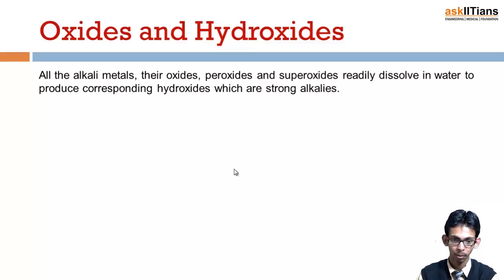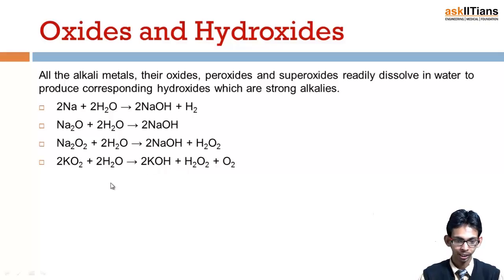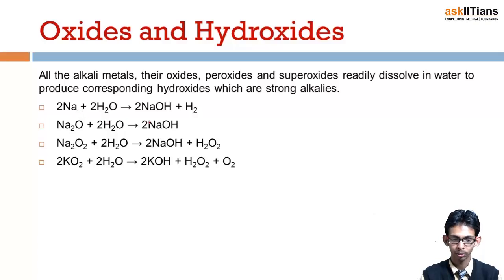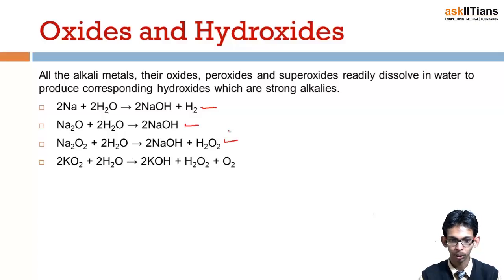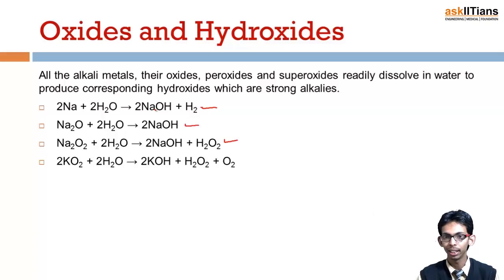This is the representation of the formation of hydroxides of sodium. Sodium dissolves in water to form sodium hydroxide. Sodium oxide also dissolves in water to form sodium hydroxide. Similarly, sodium peroxide also dissolves in water to form sodium hydroxide, and the same is done by potassium superoxide. This is the way sodium hydroxide can be prepared — by direct reaction of alkali metals with water, or by dissolution of their oxides and peroxides in water.